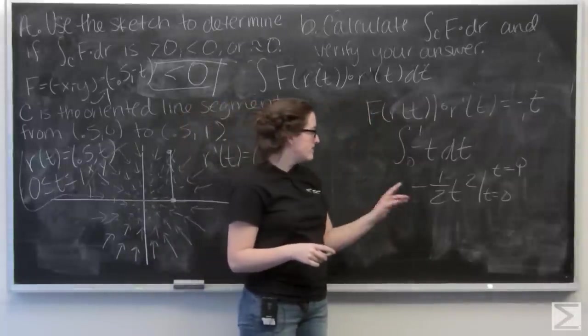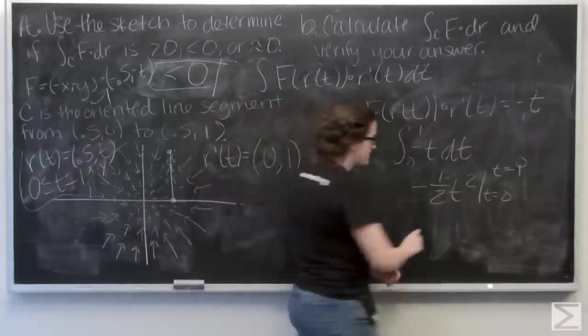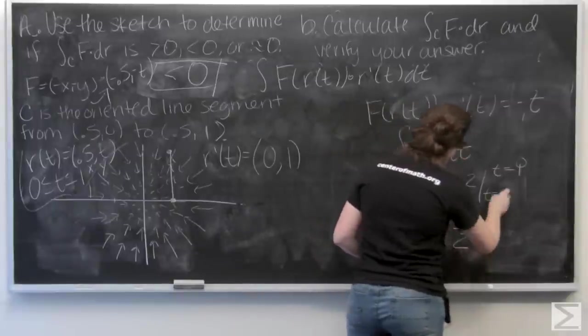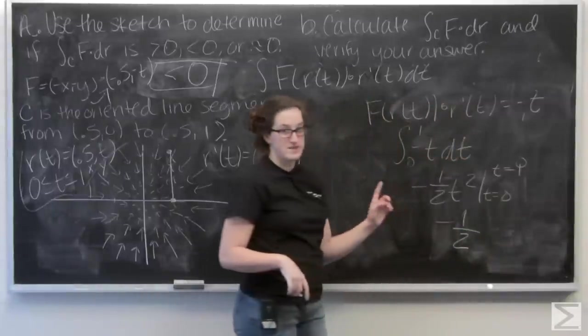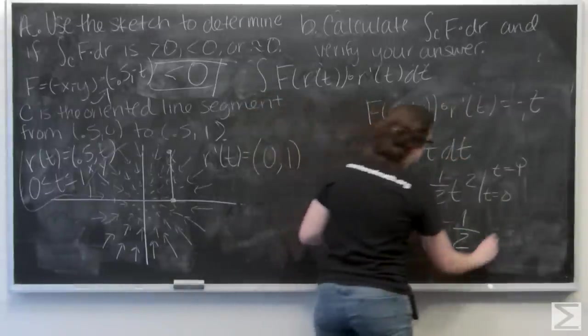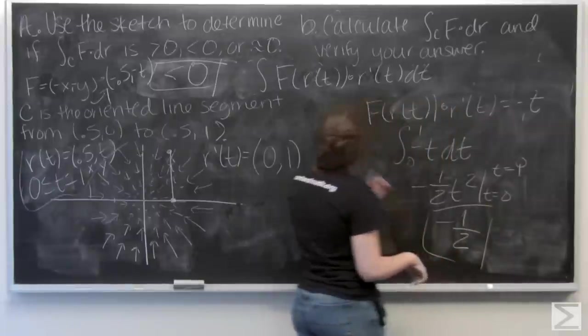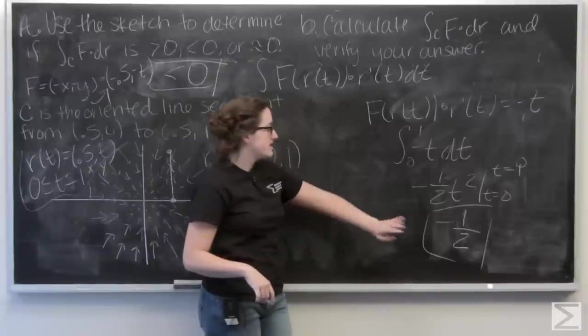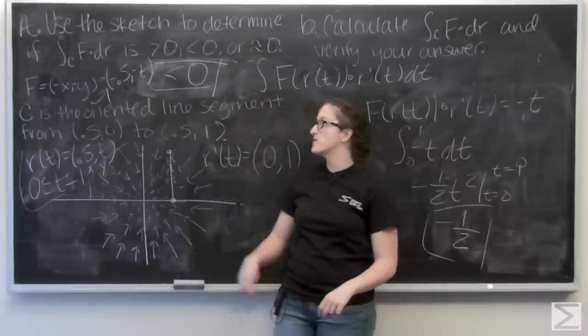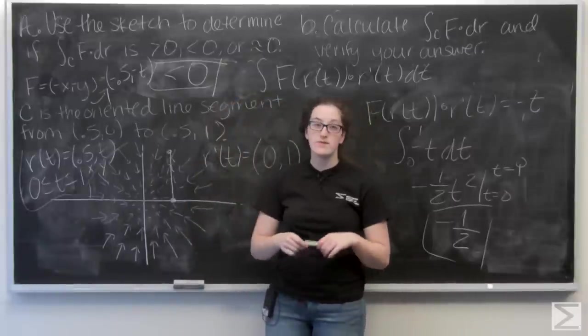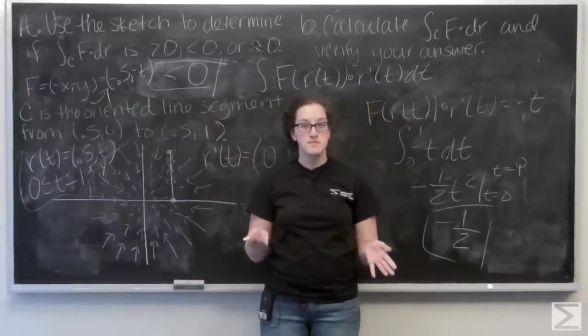So let's go ahead and plug in 1. I get negative one half. And then when I plug in t equals 0, I get 0. So the line integral of f along c is negative one half, which confirms my answer in part A, that it was going to be less than 0. And I'm all done.